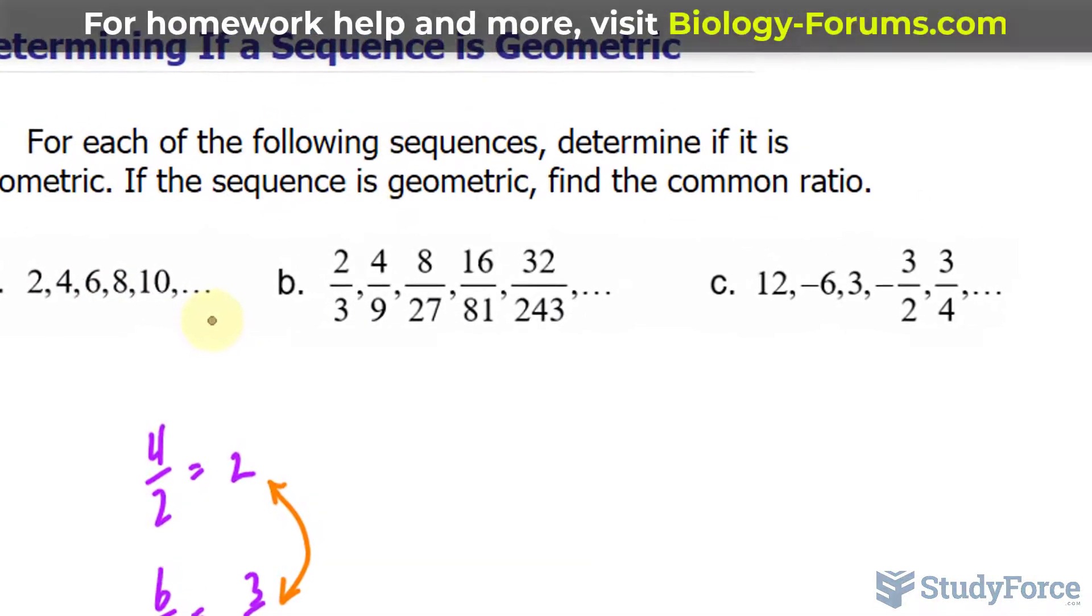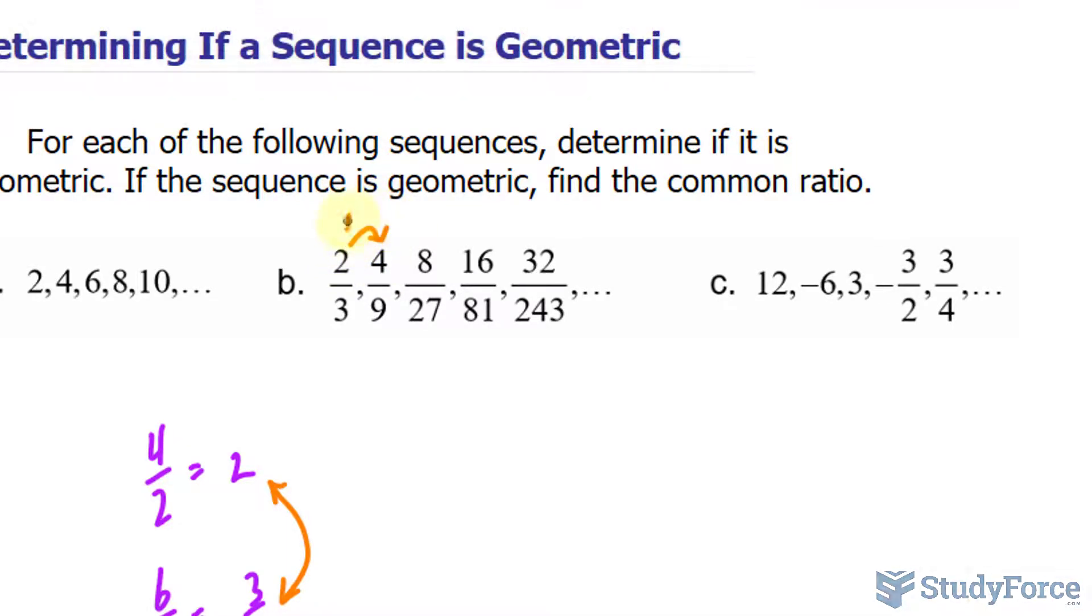What about the next group? We go from 2 over 3 to 4 over 9 to 8 over 27 and so on. Well as you can see from 2 to 4, you can multiply 2 by 2 and you end up with 4. And multiplying 3 by 3 gives you 9. So there's a possibility that the common ratio here is 2 over 3.